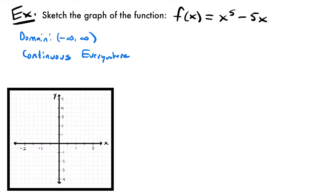Because our function is continuous everywhere and is a polynomial, we can also conclude that this function is not going to have any asymptotes. That's the next thing we'd want to check when sketching the graph of a function — we want to locate any potential asymptotes, whether vertical or horizontal. But in this case, we have no asymptotes.